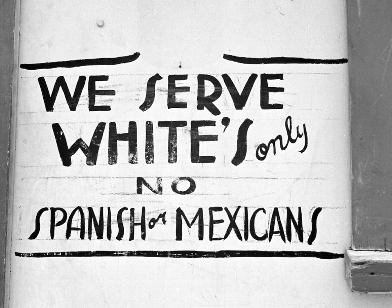Interestingly, Mexican Americans were not considered colored, but they were actually considered white — though not white with a capital W. They were considered 'other white,' and this was a distinct class of white, and because of this they were often excluded because of this otherness.